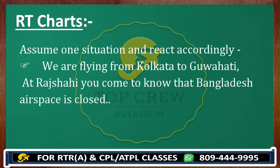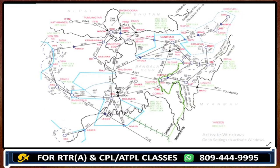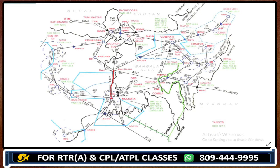So we were flying from here to Guwahati — from Kolkata to Guwahati. What happened suddenly? We are at Ratsahi, and at Ratsahi we come to know Bangladesh airspace is closed. So how do we react in that particular situation?